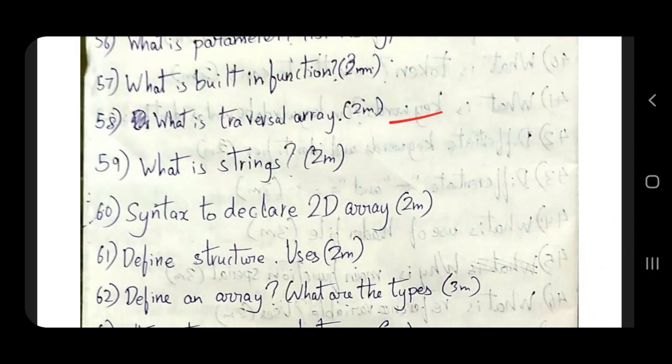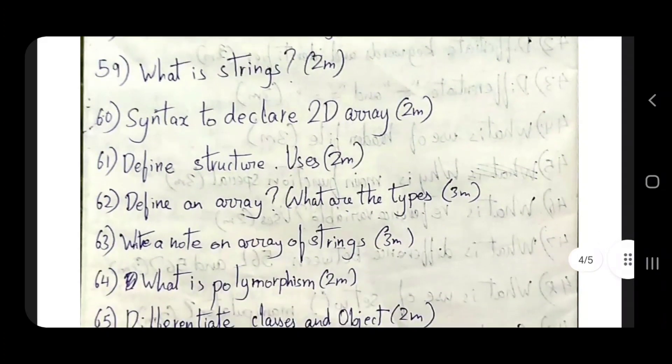What is traversal array? Definitely. What is strings? Definitely. Syntax to declare 2D array - very, very important. Define structures and uses. Define array. What are the types? Definitely, 3 mark. Write a note on arrays of strings, 3 mark.